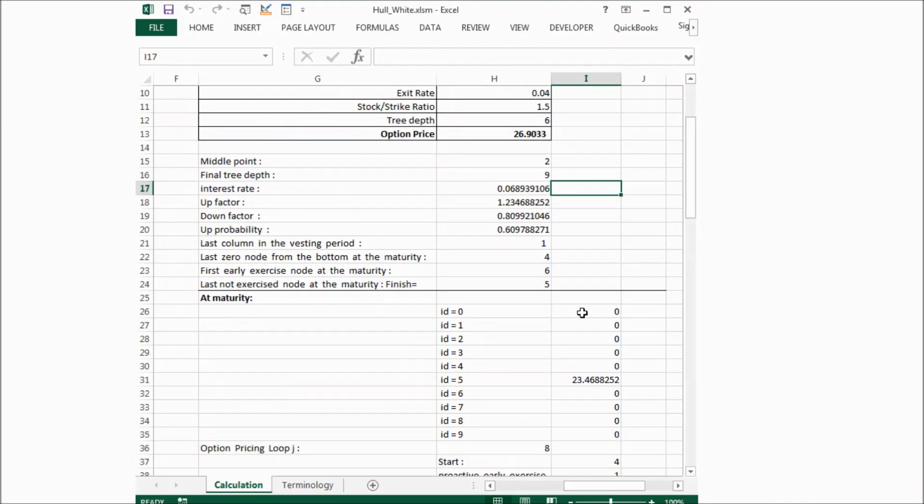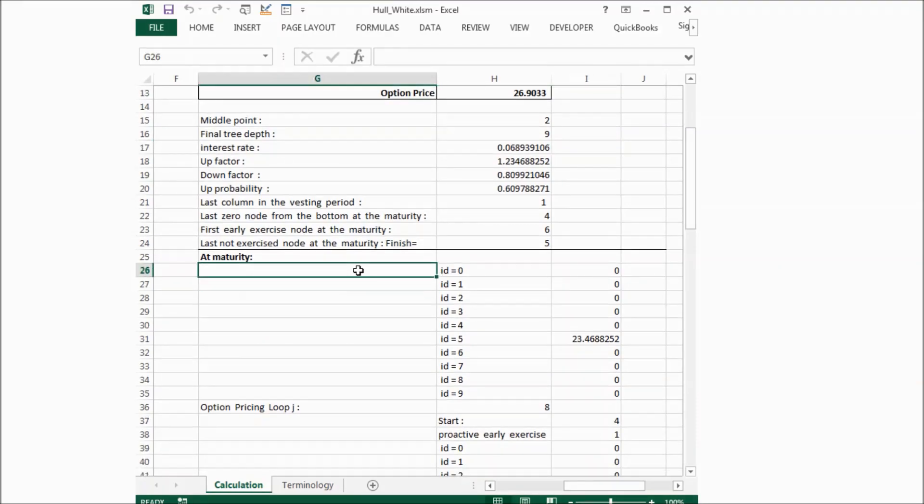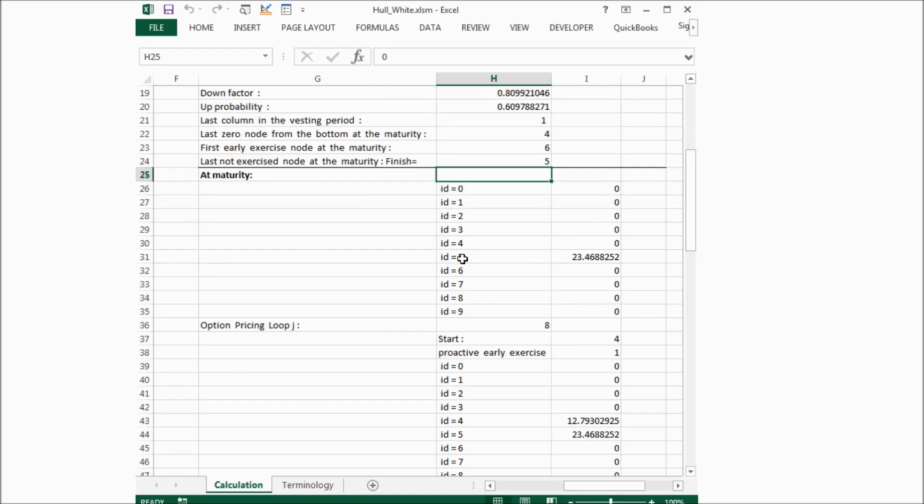If we go below, as I mentioned, the model calculates the value of the nodes at maturity first. You can see in this example, at maturity, only node 5 has this value. And other nodes, they either got early exercise already, or they're out of the money.